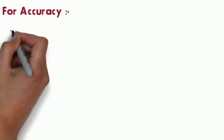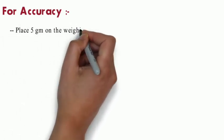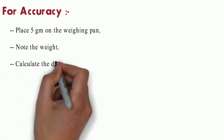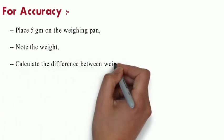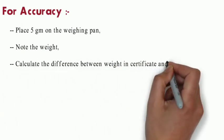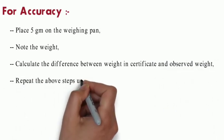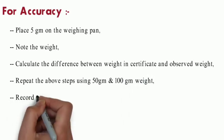For accuracy, place 5 grams on the weighing pan, note the weight, and calculate the difference between the weight in certificate and observed weight. Repeat the above step using 50 grams and 100 grams of weight. Record the reading in Annexure 2.